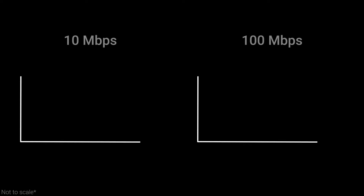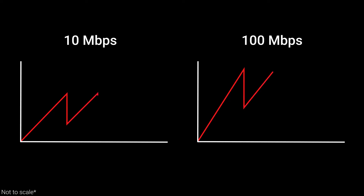So if data is being sent to us both at the same rate, why does your download happen faster than mine? Let's go back to the graph. Remember, you're on a 100 Meg connection and I'm only on 10 Meg — my network gets congested a lot quicker than yours. You can take a lot more data before that traffic jam starts and you hit the max threshold. That's why your download happens faster than mine.